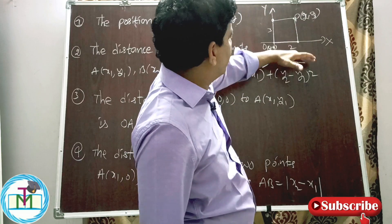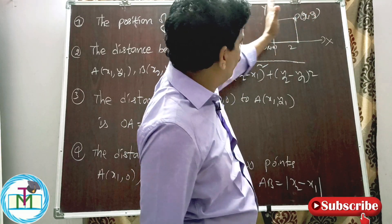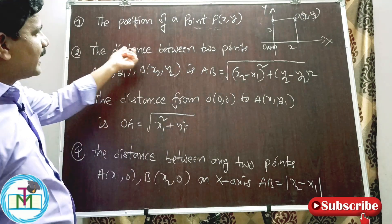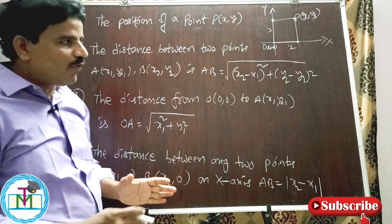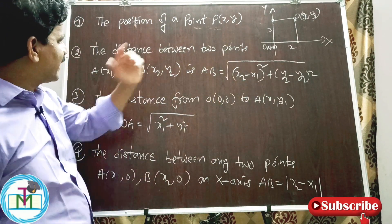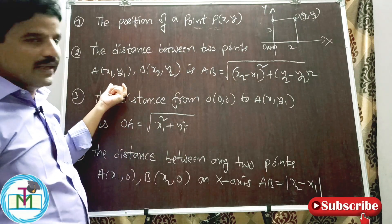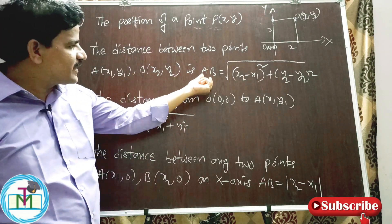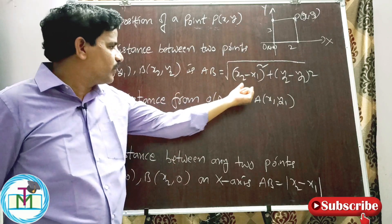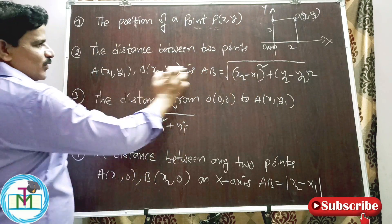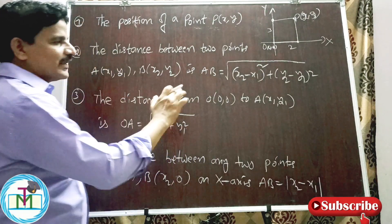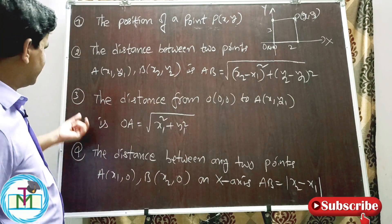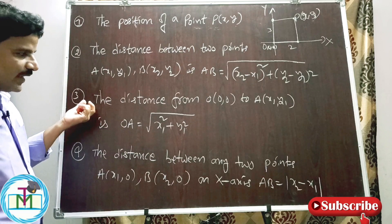Point number two: the distance between two points. Whenever two points A(x1, y1) and B(x2, y2) are given on a Cartesian plane, the distance AB is equal to the square root of (x2 − x1)² + (y2 − y1)².